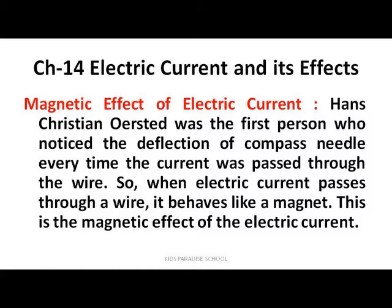The wire behaves like a magnet only until the current is passing through it. Oersted noticed the deflection of the compass needle every time current was passed through the wire. He observed that when he passed current through a wire and placed a compass needle near it, the compass needle deflected. So he concluded that when current passes through the wire, the wire behaves like a magnet. He named this effect the magnetic effect of electric current.